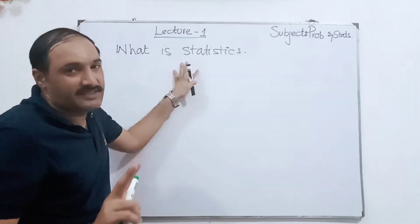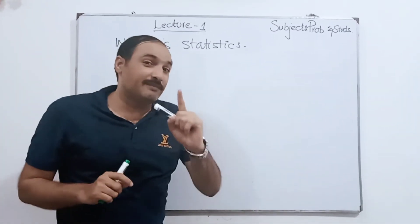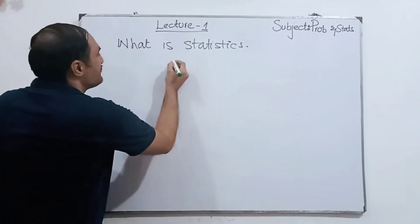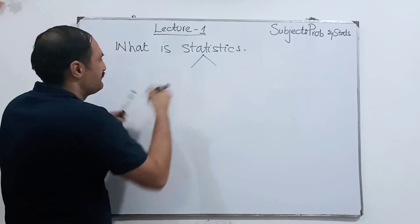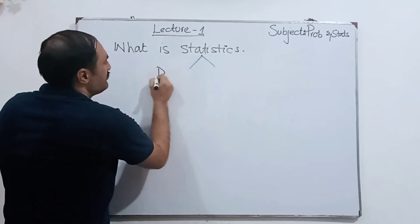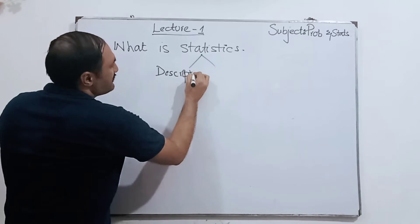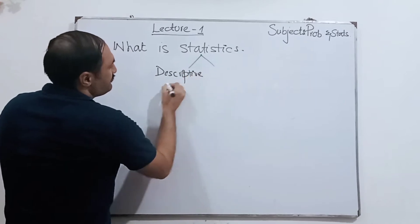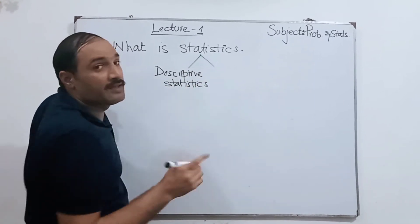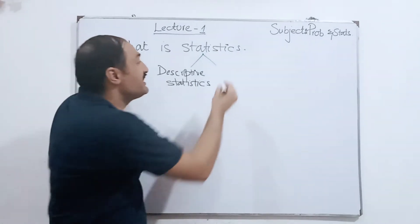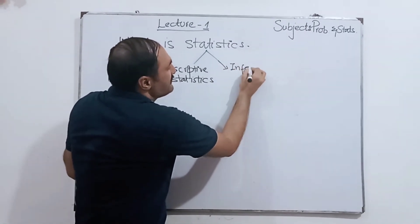There are two branches of statistics. Number one is descriptive statistics, and the second one is inferential statistics.